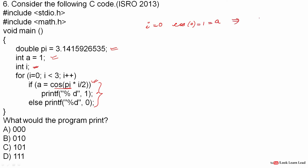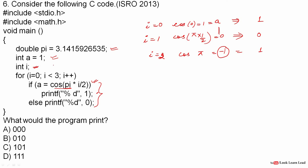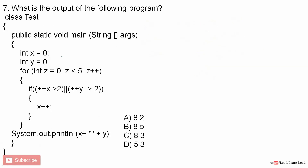For i equal to 1, we compute cos(pi/2) which is 0, so a equals 0 and 0 is printed. For i equal to 2, we compute cos(pi) which is -1. Since a is an integer variable, the comparison returns 1, so 1 is printed. The loop runs for i = 0, 1, and 2, so the output is 1, 0, 1. The answer is C.